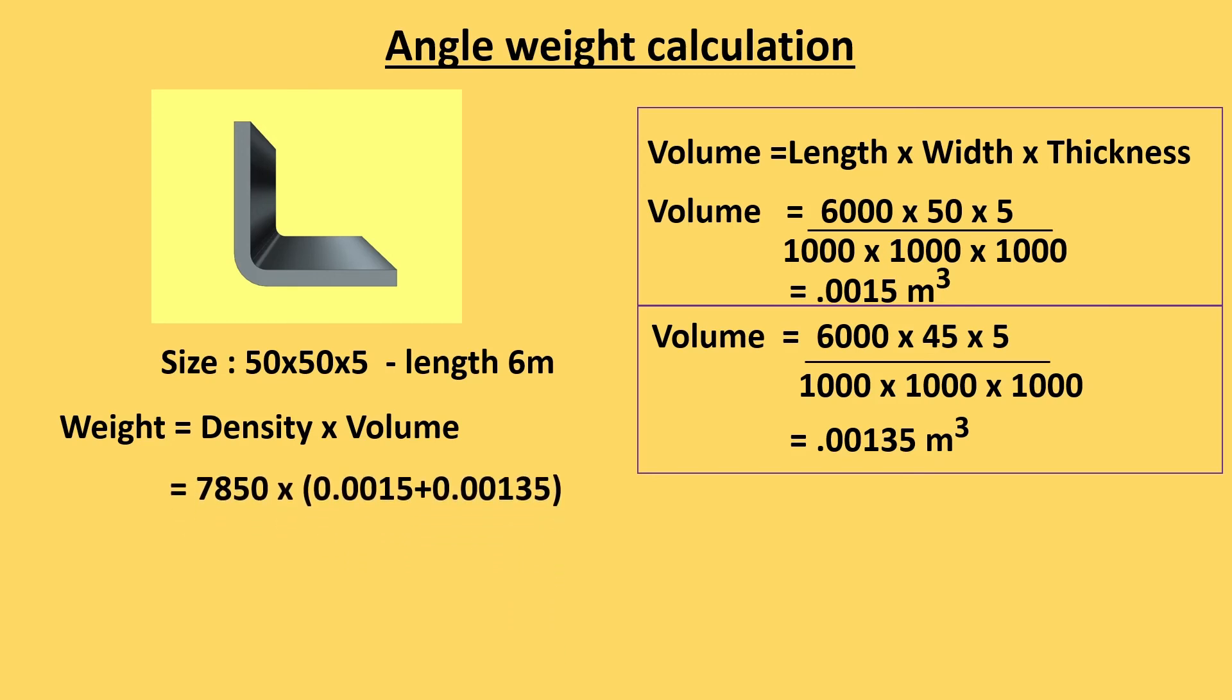Now multiplication of density of MS 7850 and total volume of this angle, and density of MS is 7850 kg per meter cube. Here all dimensions are in kg and meter cubes and total volume is rectangle A plus rectangle B.